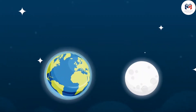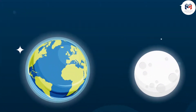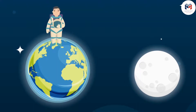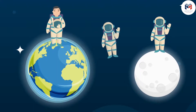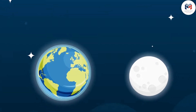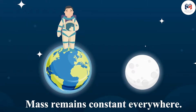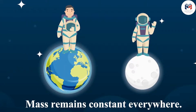Mass of an object remains the same everywhere. It doesn't matter whether the object is on the earth, the moon, or even in outer space. Therefore, we can say that the mass of an object remains constant and does not vary from place to place.